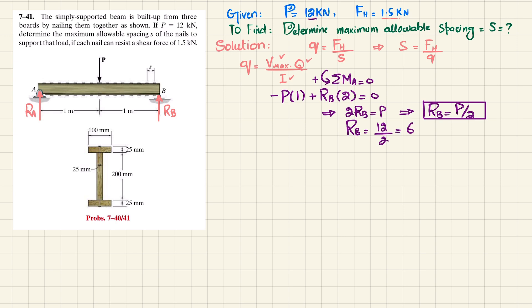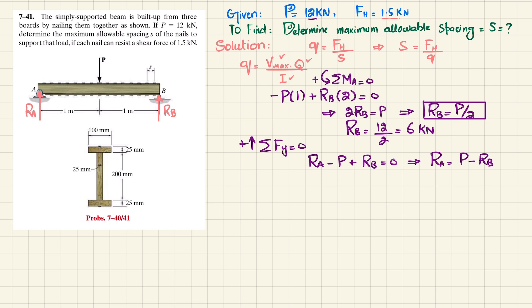P is equal to 12 kilonewton, so R_B equals 12 divided by 2, which is 6 kilonewton. Now we find R_A using the equation that the sum of all forces along the y direction equals zero, with upward forces positive. R_A minus P plus R_B equals zero, so R_A equals P minus R_B, which is 12 minus 6, giving R_A equal to 6 kilonewton.